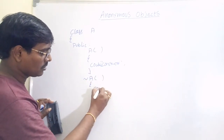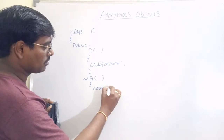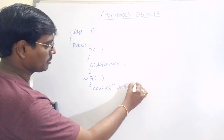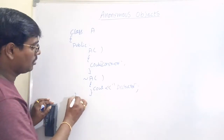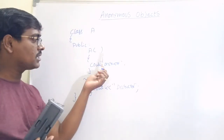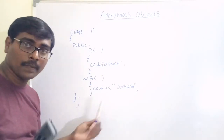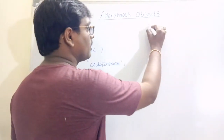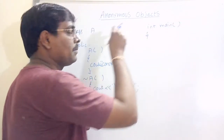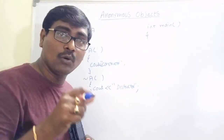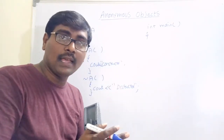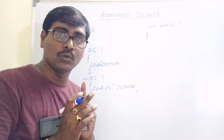Now create the main function. Into main, here I am creating an anonymous object. How to create an anonymous object? Simply write the name of the class with parentheses. The name of the class is A, so we write A().